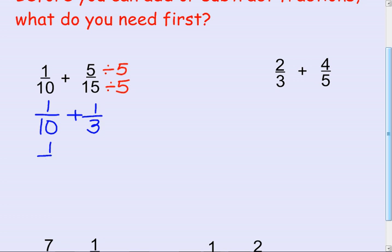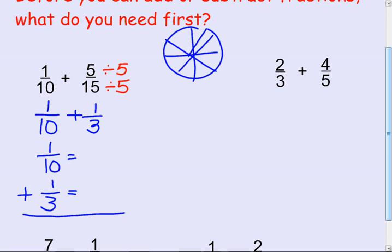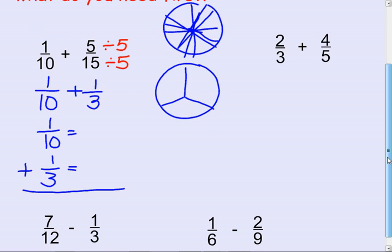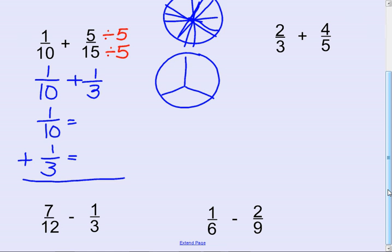I like to do mine this way. 1 tenth. And I want to add these. Now, this is saying I have a pie, I cut it into 10 pieces, I only have one. This is a pie, I cut it into 3 pieces, I only have one. But what's true about the size of the pieces? If I have a pie and I cut it into 10 pieces, they're pretty little, right? What if I take a pie and I divide it into thirds? They're bigger. So how can you add these? I want everybody to think about it. They add the denominators. You can't.